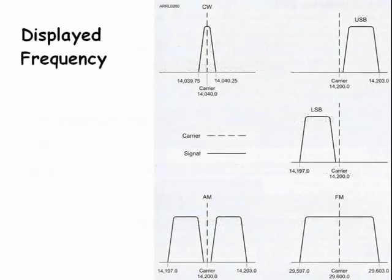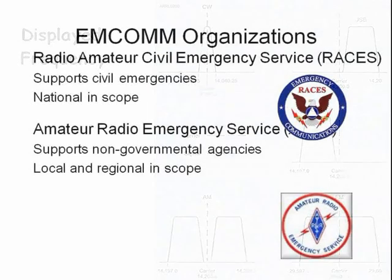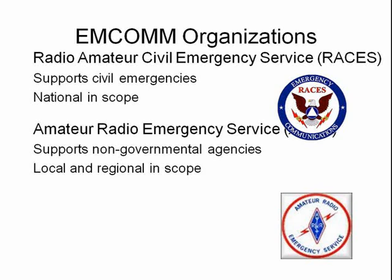Here is a spectrum plot of several different modes including CW, single sideband, AM, and FM. There are two ham organizations that provide support during emergencies: ARES and RACES. Any ham can participate in ARES.